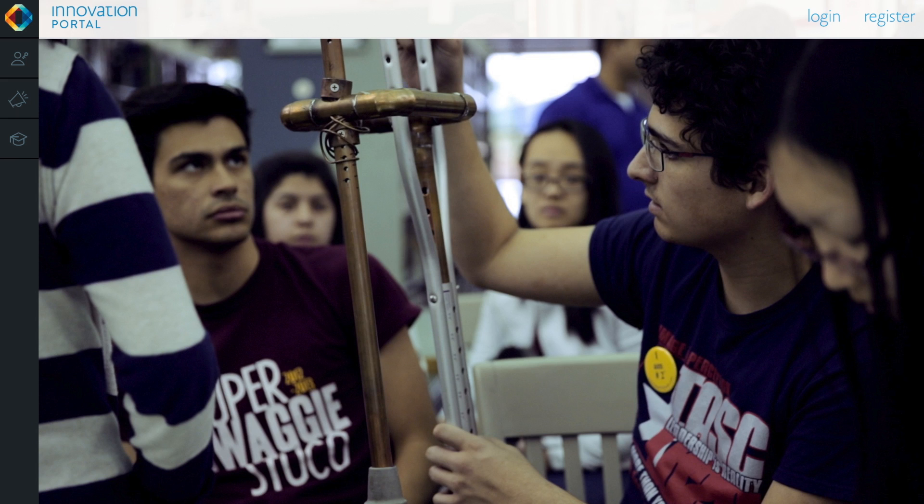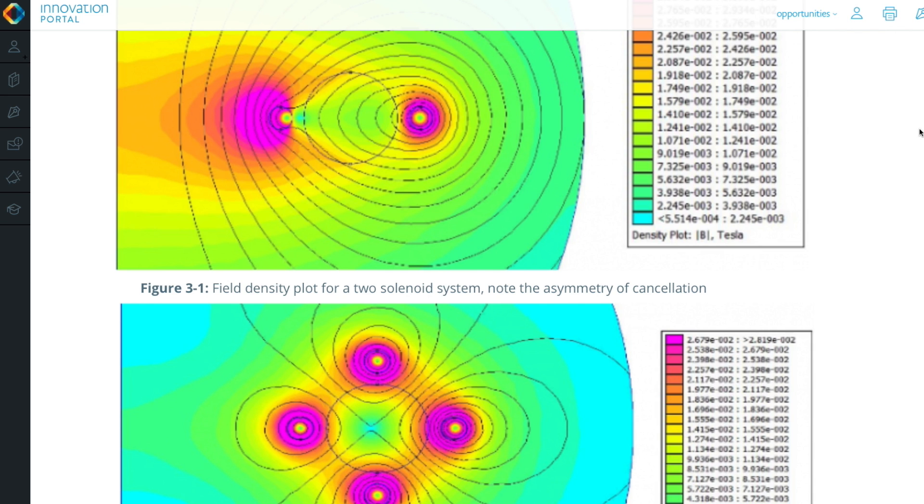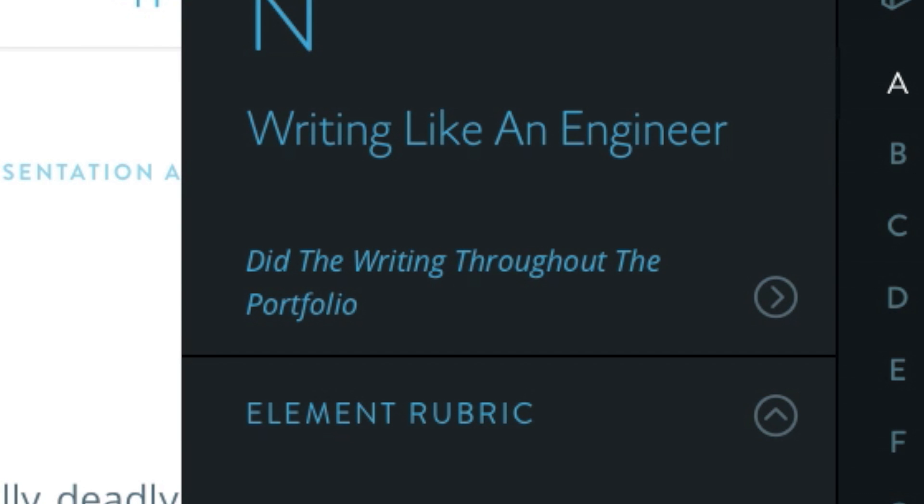Innovation portal, it's just an online portfolio where you can keep track of all your progress throughout the design process. The innovation portal is very helpful in that it allows a clear and concise way to view the organization and the progression of events.